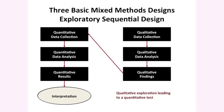We can reverse this, and we have an exploratory design where we start not quantitatively but qualitatively. We start with qualitative data collection, explore and come up with findings, then use those findings to follow up with a quantitative phase. For example, we might use qualitative findings to develop a new instrument because there aren't existing instruments to measure a certain phenomenon with a population. I call it qualitative exploration leading to a quantitative test.